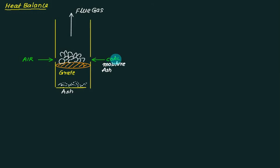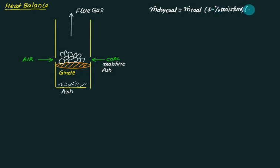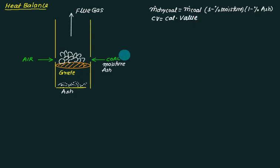Only the dry coal will get burned. The mass of dry coal equals mass of coal multiplied by (1 minus percentage of moisture) multiplied by (1 minus percentage of ash). If CV is the calorific value of the coal, the heat input Q_in equals mass of dry coal multiplied by calorific value — that is equation number one.